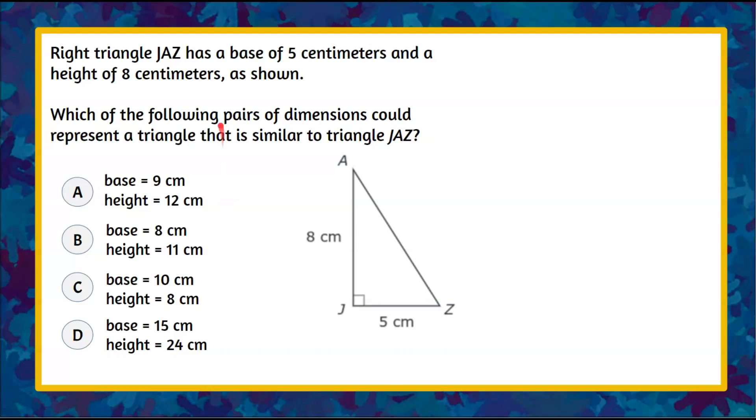Welcome back. So once again let's review that we have right triangle JAZ that has a base of 5 centimeters so JZ is our base with a dimension of 5 and then we have a height right here, a height of 8 centimeters so side AJ is the height.